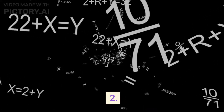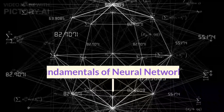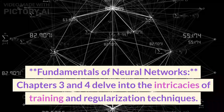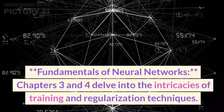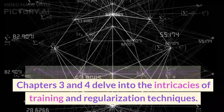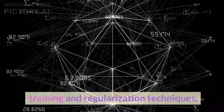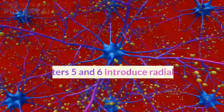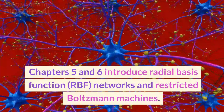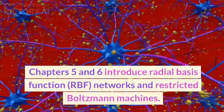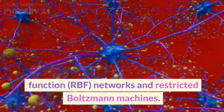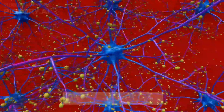Chapters 3 and 4 delve into the intricacies of training and regularization techniques. Chapters 5 and 6 introduce radial basis function (RBF) networks and restricted Boltzmann machines.